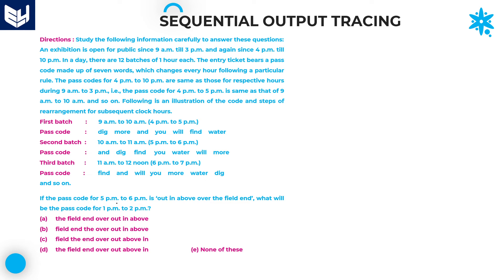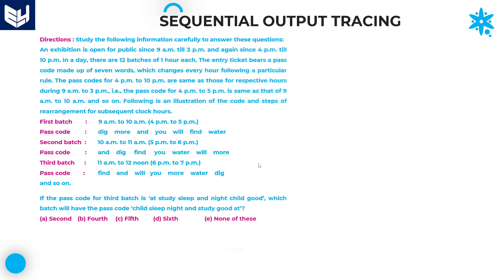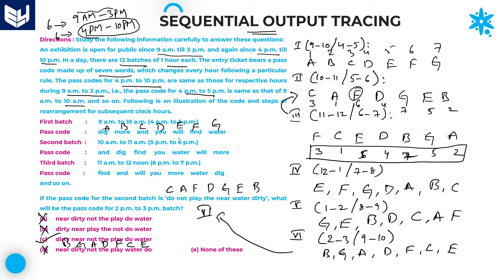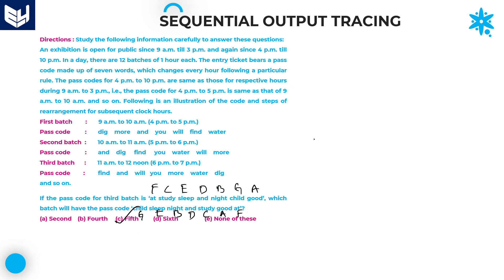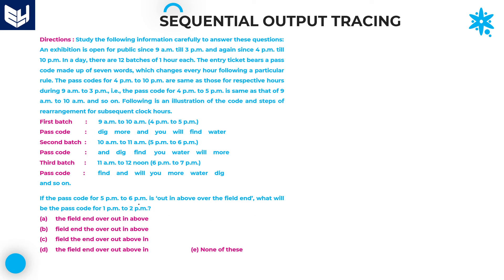Question 3: the passcode for 5 to 6 PM is given — we need to find the passcode for 1 to 2 PM. 5 to 6 PM is batch number 2, given as C, A, F, D, G, E, B.